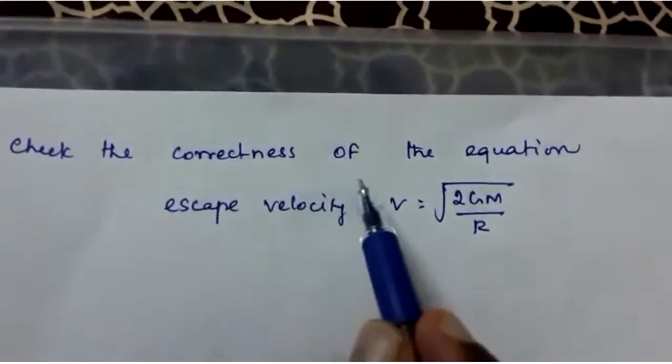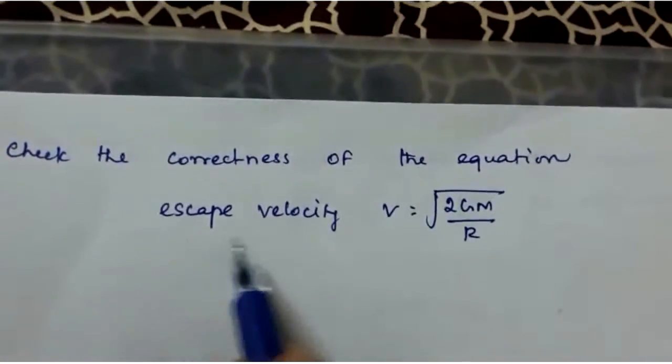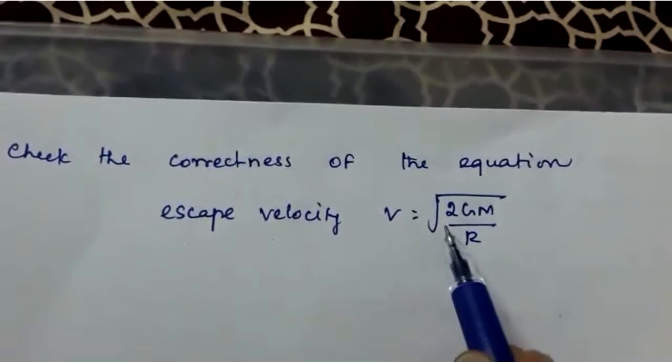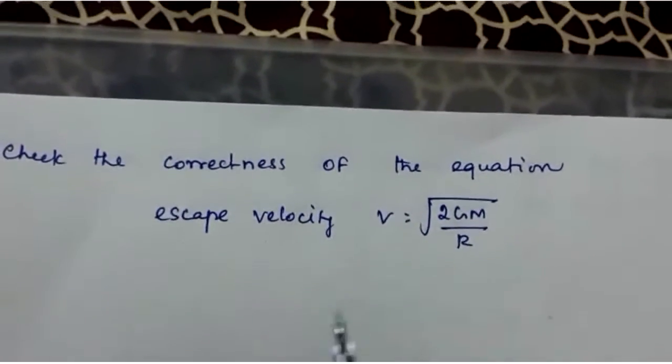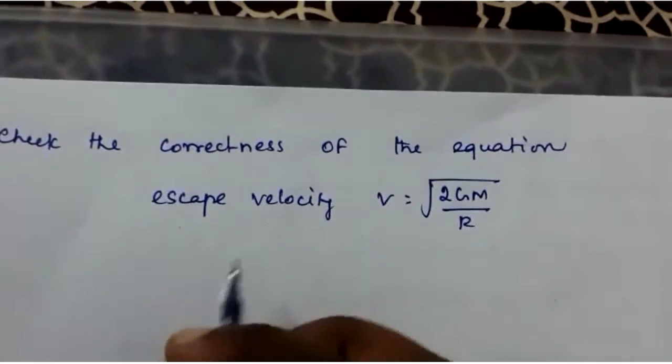Check the correctness of the equation. Escape velocity V is equal to root of 2GM by R. This is an expression for escape velocity.